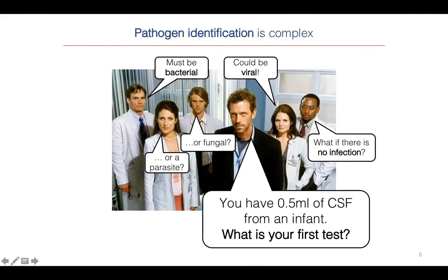When we think about pathogen identification, it's complex. Like Dr. House's crack team, people might offer different ideas about what is making the patient ill and have ideas about pathogens to look for. Some could be bacterial, parasites, fungi, or viral — or maybe there is no pathogen at all, and this is simply not an infectious disease.